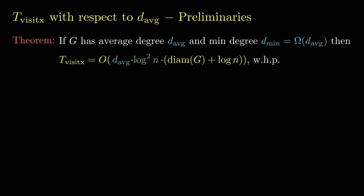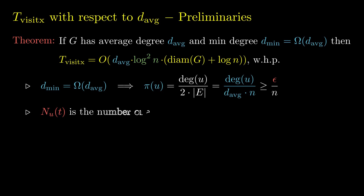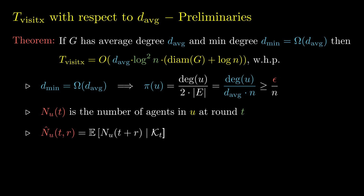Let's introduce some notation. In the proof, it will be convenient to represent the stationary distribution of node u as its degree divided by n times the average degree. The relation of the minimal and average degrees implies that this value is at least epsilon divided by n for some epsilon. The number of agents at node u at round t is denoted by n_{u,t}. The key definition is n-hat_u, which is the expected number of agents at u in round t plus r for any given execution of visit exchange up to round t, denoted by k_t. n-hat can be written as a sum where p_{v,u}^r is the probability that a random walk starting from node v is at node u after exactly r steps.